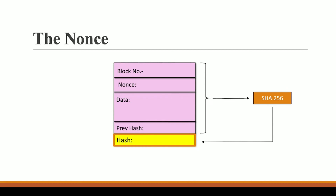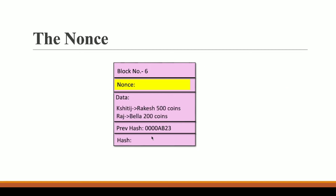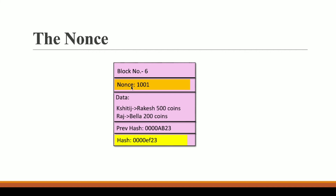Since we can change the nonce, we can also change the output of our SHA-256 algorithm, because as we change the input, the output of SHA-256 also changes. For example, if the nonce is 23, we get a hash like 00001ba1. If I change the nonce — say to 3 — we get a completely different hash. I cannot change the remaining fixed fields, but I can change the nonce to get a different hash.